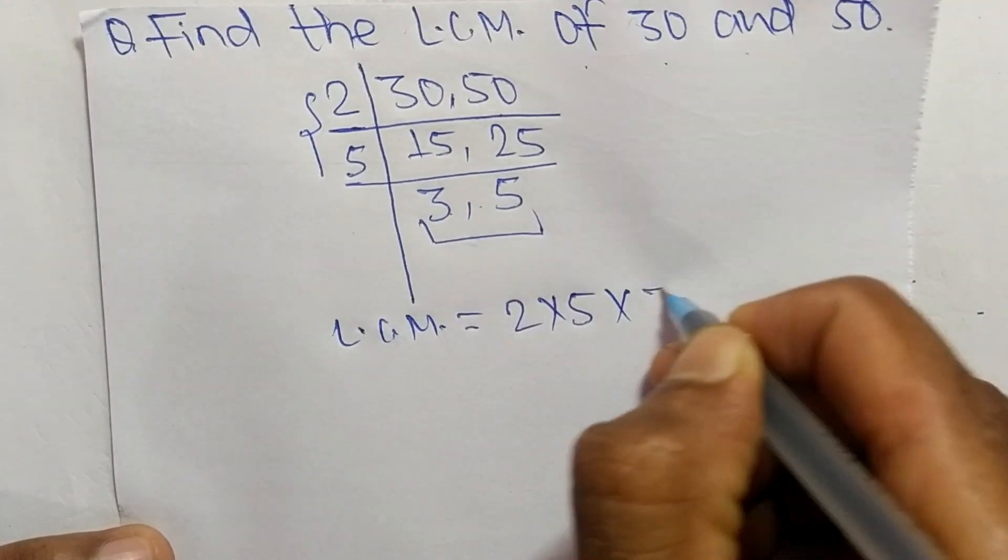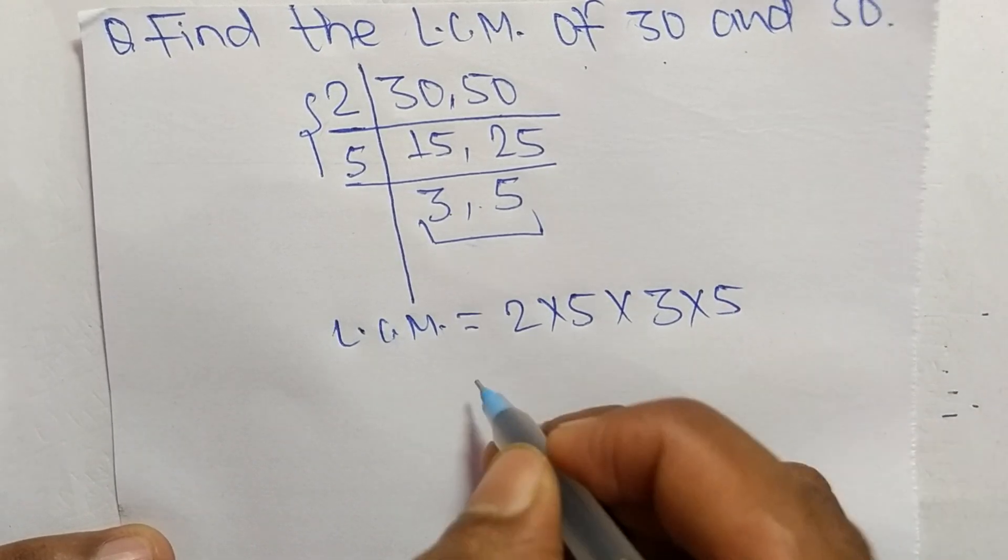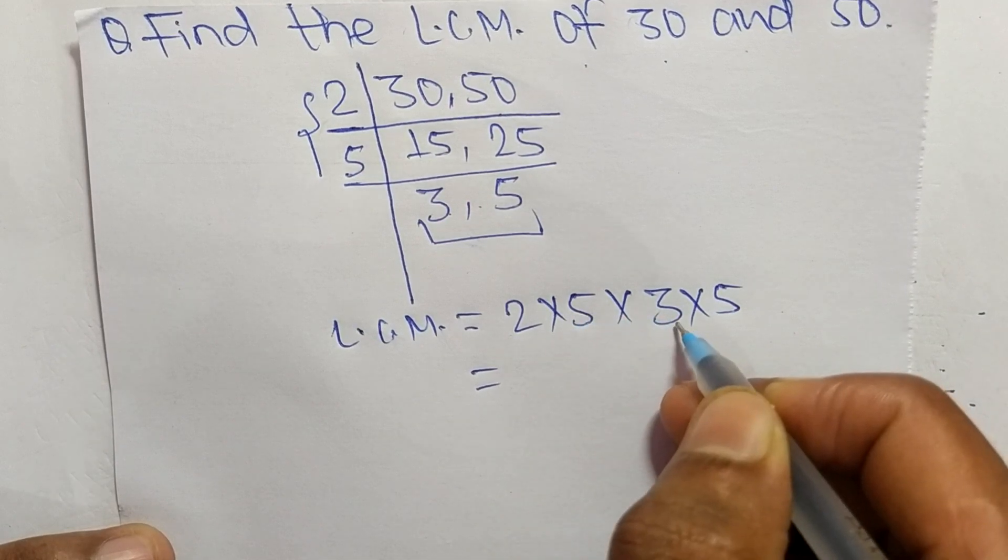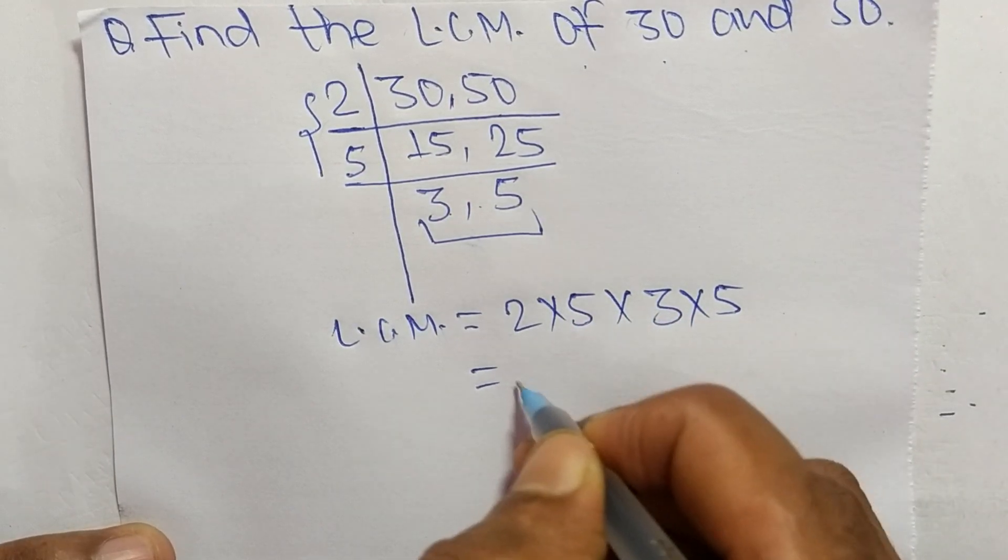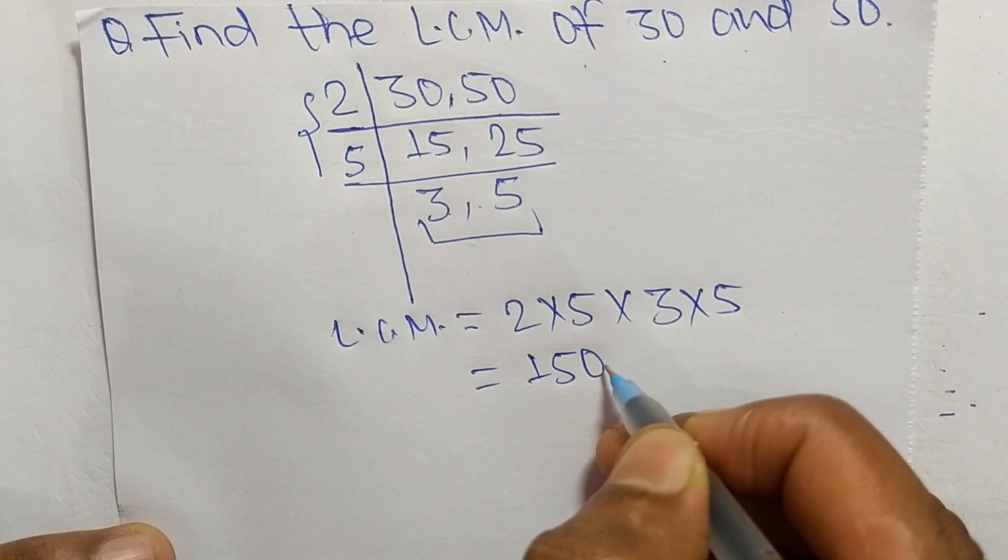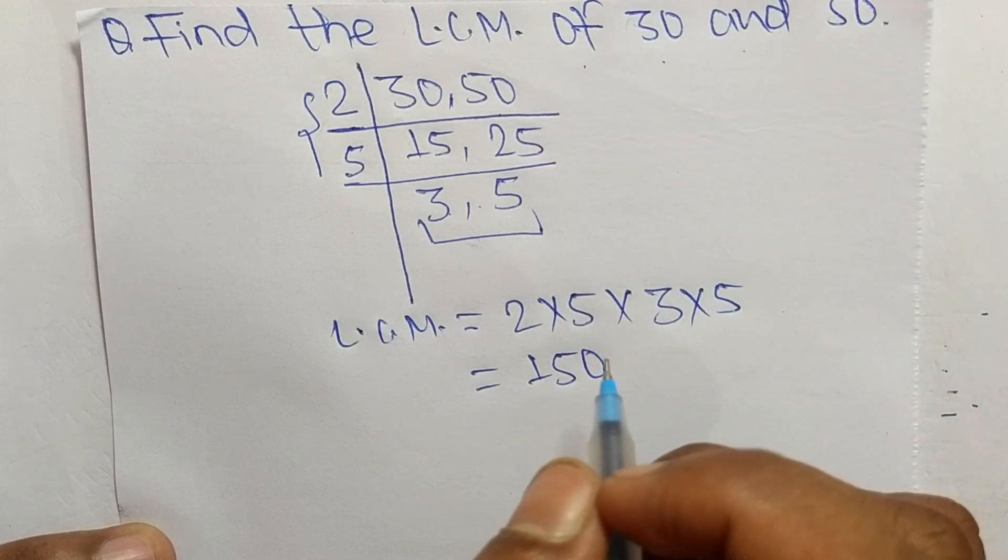So it is 2 times 5 equals 10, 10 times 3 equals 30, 30 times 5 equals 150. So 150 is the LCM of 30 and 50.